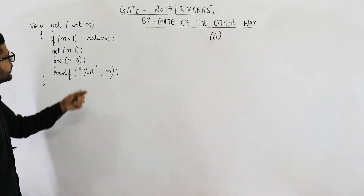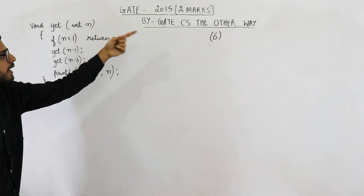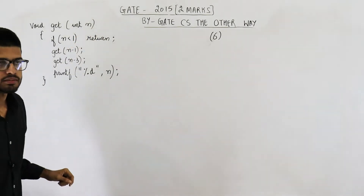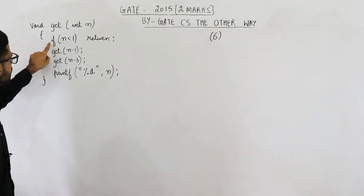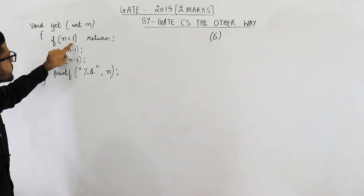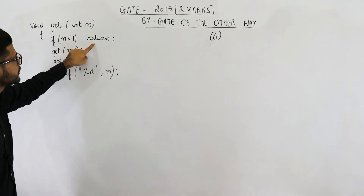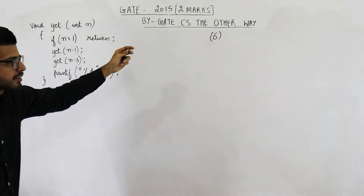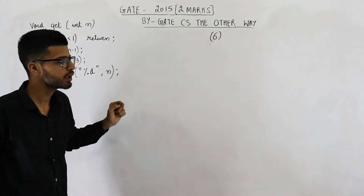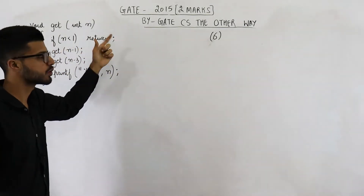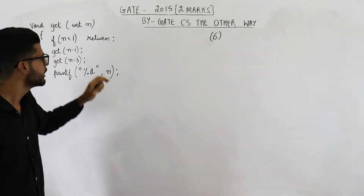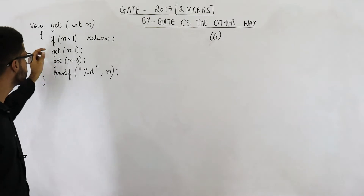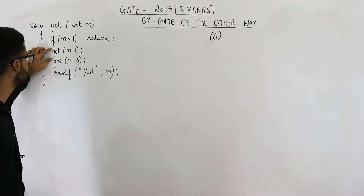Now, n will get the value 6. If n is less than 1, then return. But 6 is not less than 1, that means we will not return. Instead we will execute the next line.